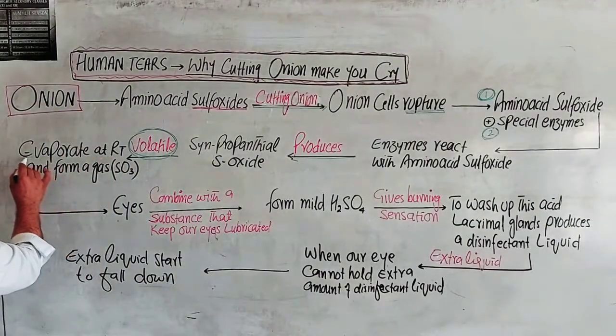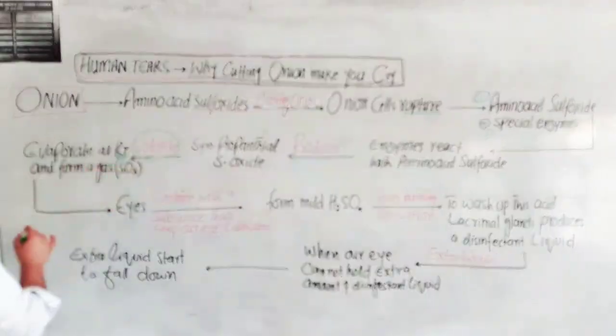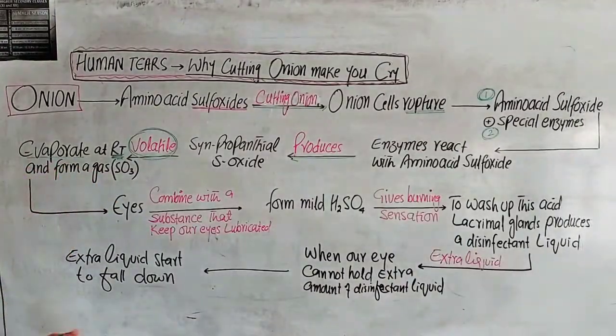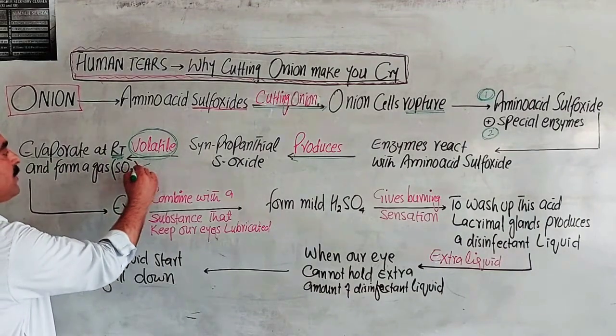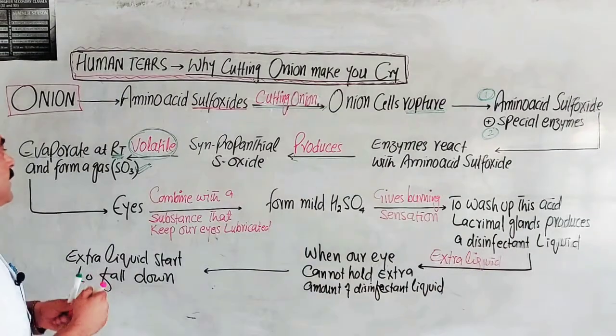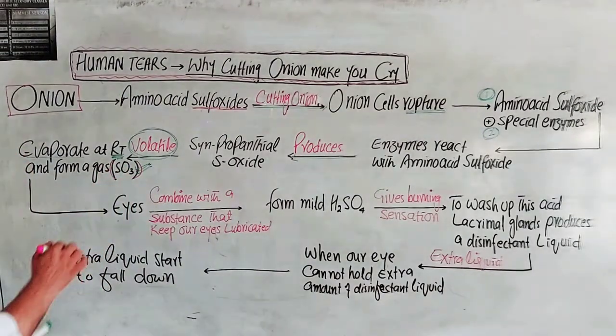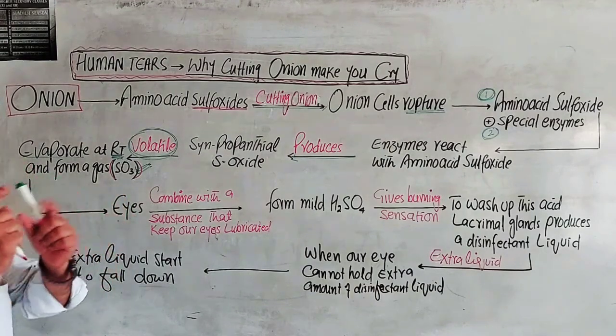This volatile compound evaporates at room temperature and forms a gas. This gas is sulfur trioxide. The sulfur trioxide gas then travels through air to human eyes.